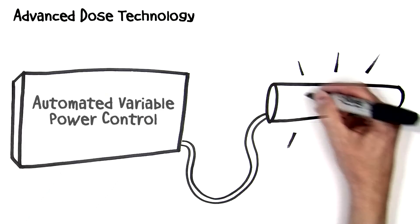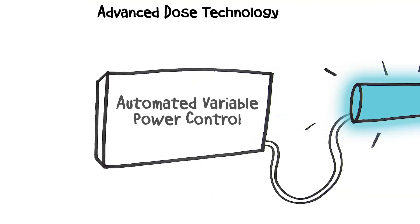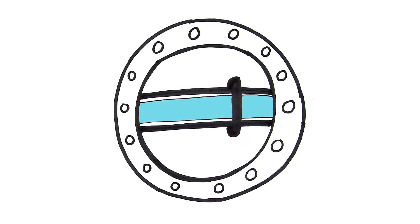Lamp intensity is automatically adjusted to maintain the required UV dose, saving energy and extending lamp life. Automated wipers slide across the lamp sleeves, keeping the optical path clean.